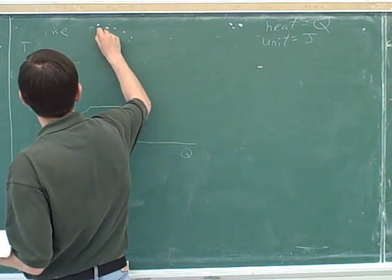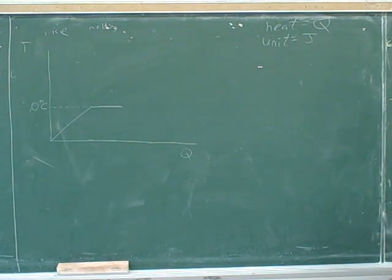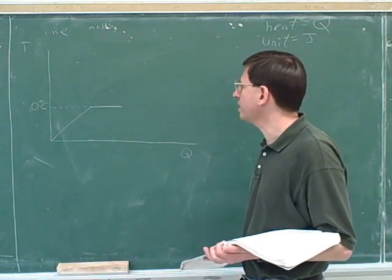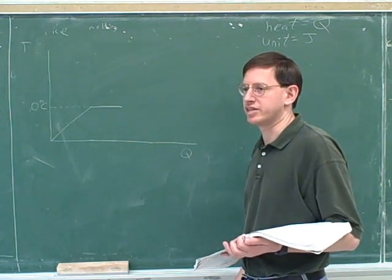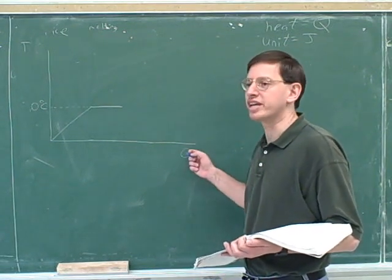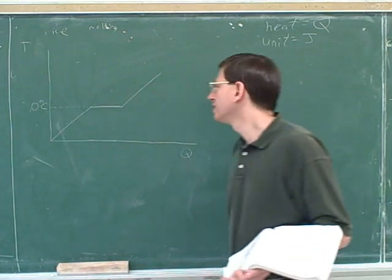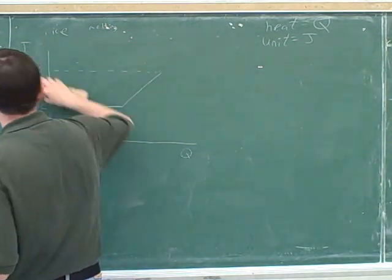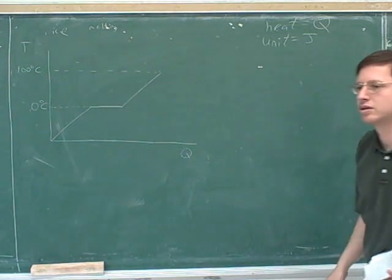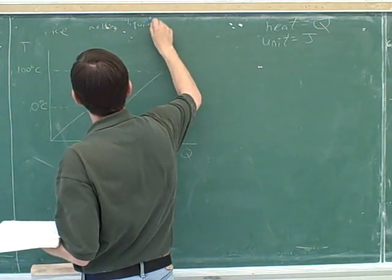This flat region is where the ice is melting. Eventually we get to the point where all the ice has melted and it's all water. At that point, if you add even more heat, the water's temperature starts to go up again. It goes up until you get to 100 degrees Celsius. So in this region of the graph, we have liquid water.